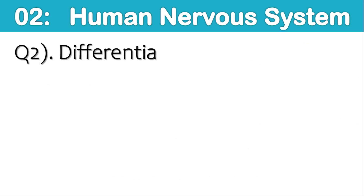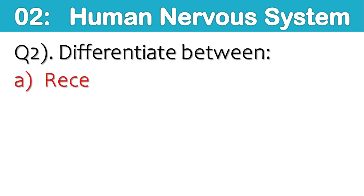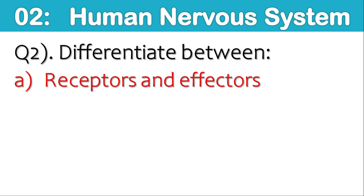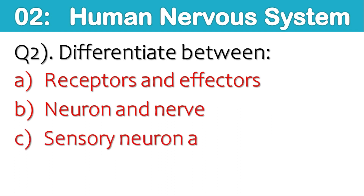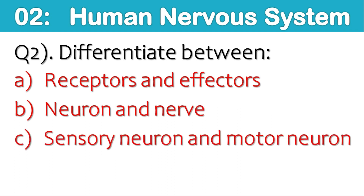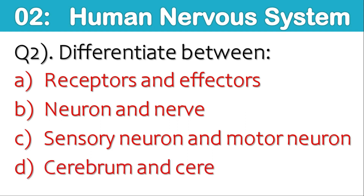Q2. Differentiate between Receptors and Effectors, Neuron and Nerve, Sensory Neuron and Motor Neuron, Cerebrum and Cerebellum.